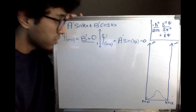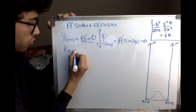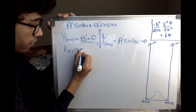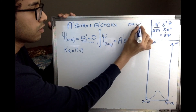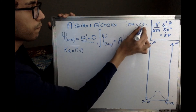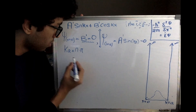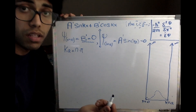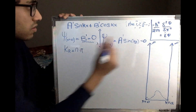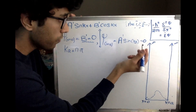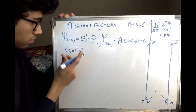Since sin(ka) = 0, this means ka must equal nπ, where n = 1, 2, 3, and so on. This tells us that the particle has discrete energies — we have finally quantized the energy of the particle, since sin(ka) only equals 0 when ka is an integer multiple of π, which is not continuous.